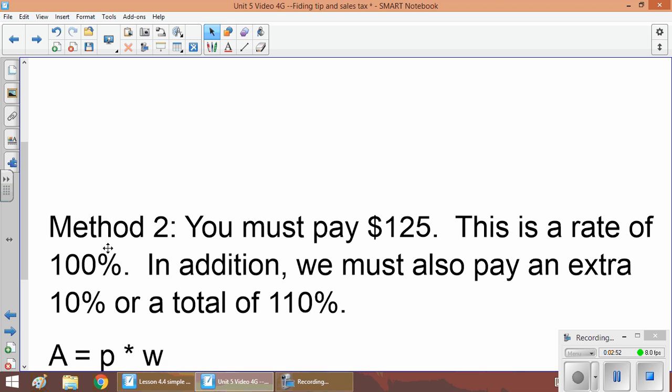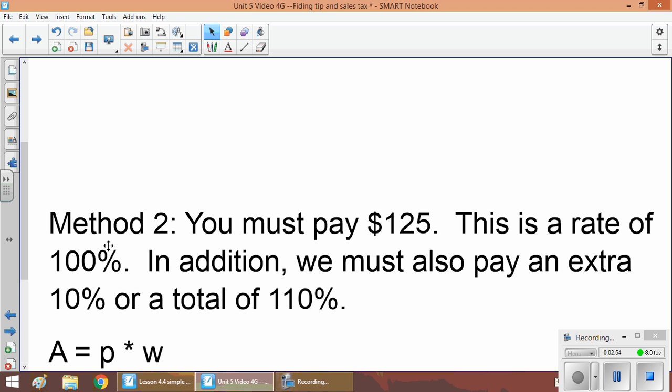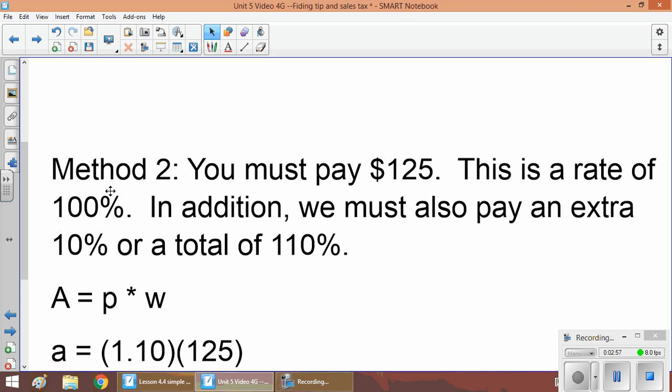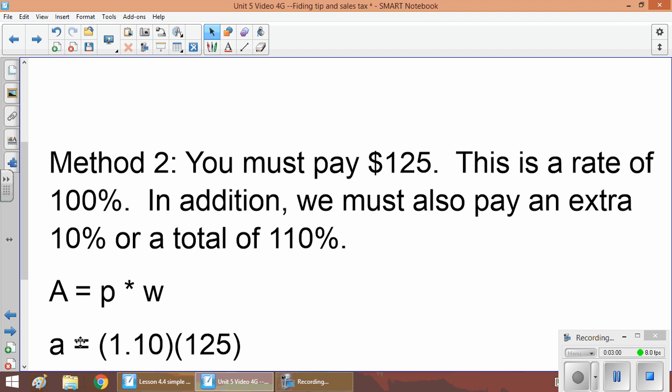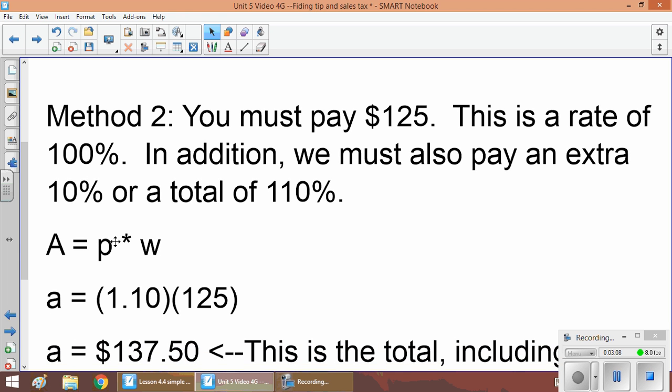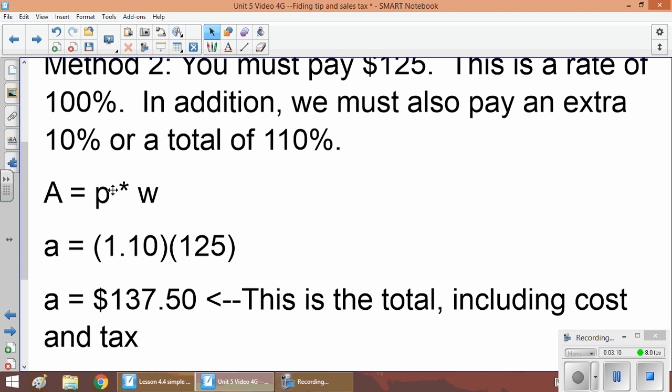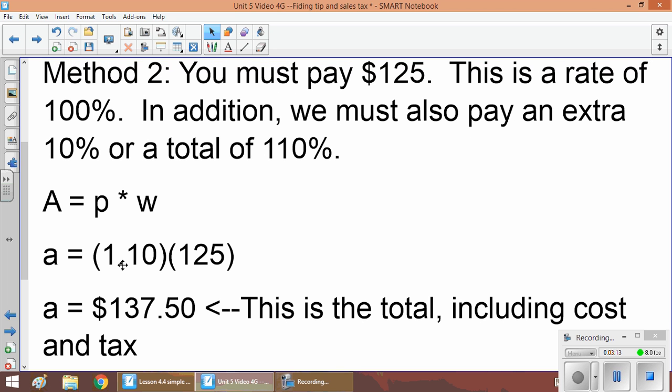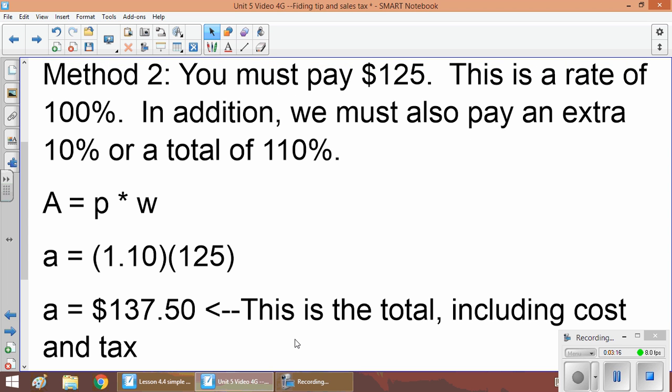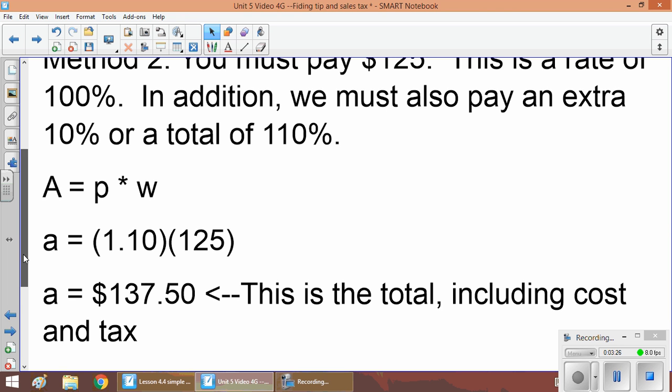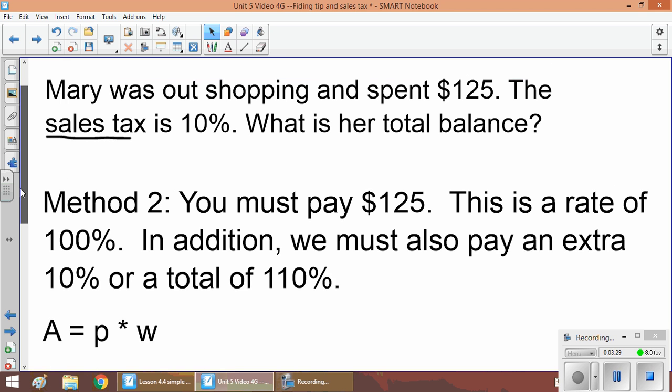So we start with our formula a = p × w and then substitute in a = our percent, we're going to do 1.10 or 1.1 × 125. And we get an answer of 137.50 or $137.50. So this is the total including what we spent plus the 10% sales tax. So that's our overall final cost that we have to pay. Okay, so Method 1 and Method 2.